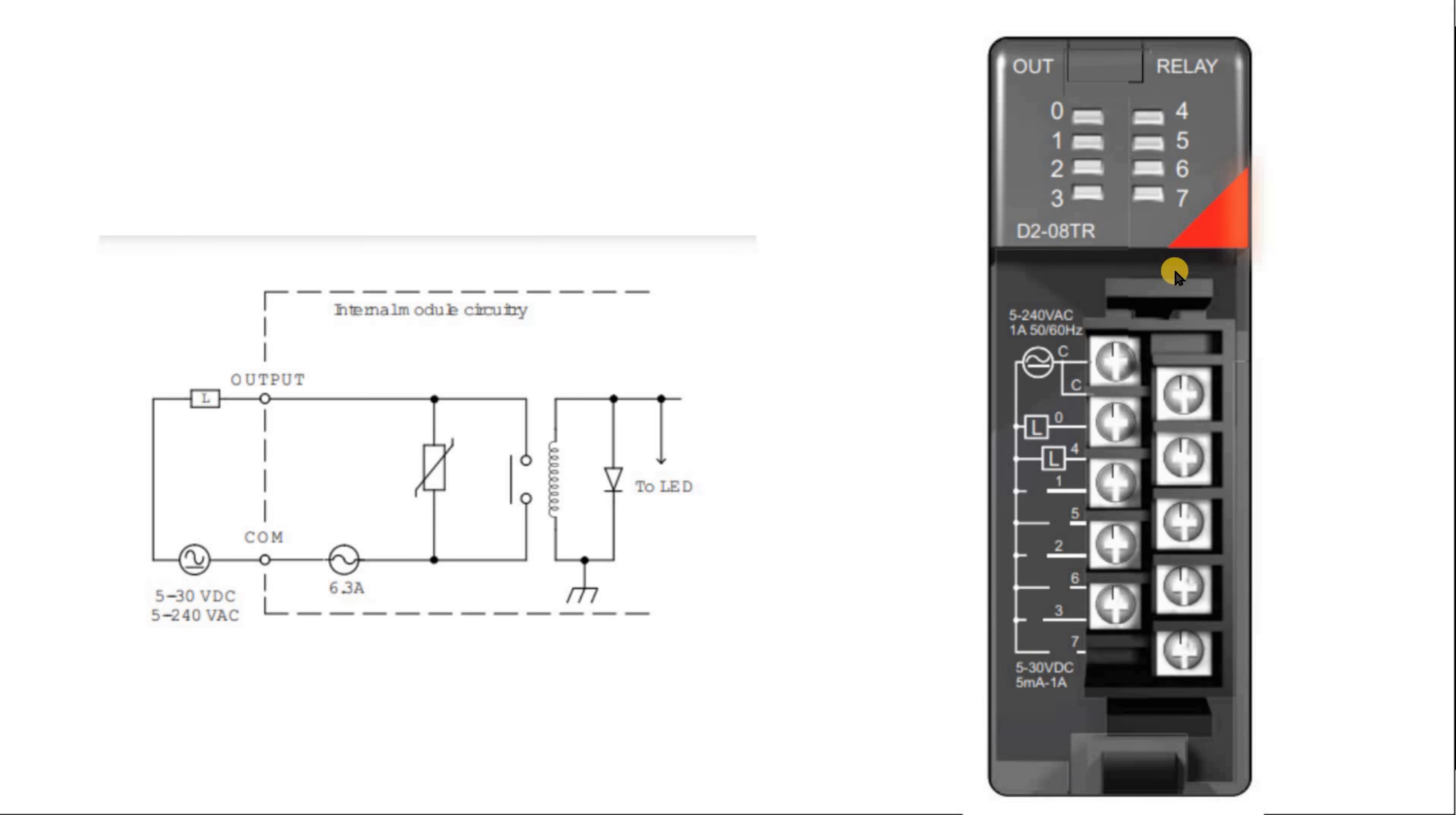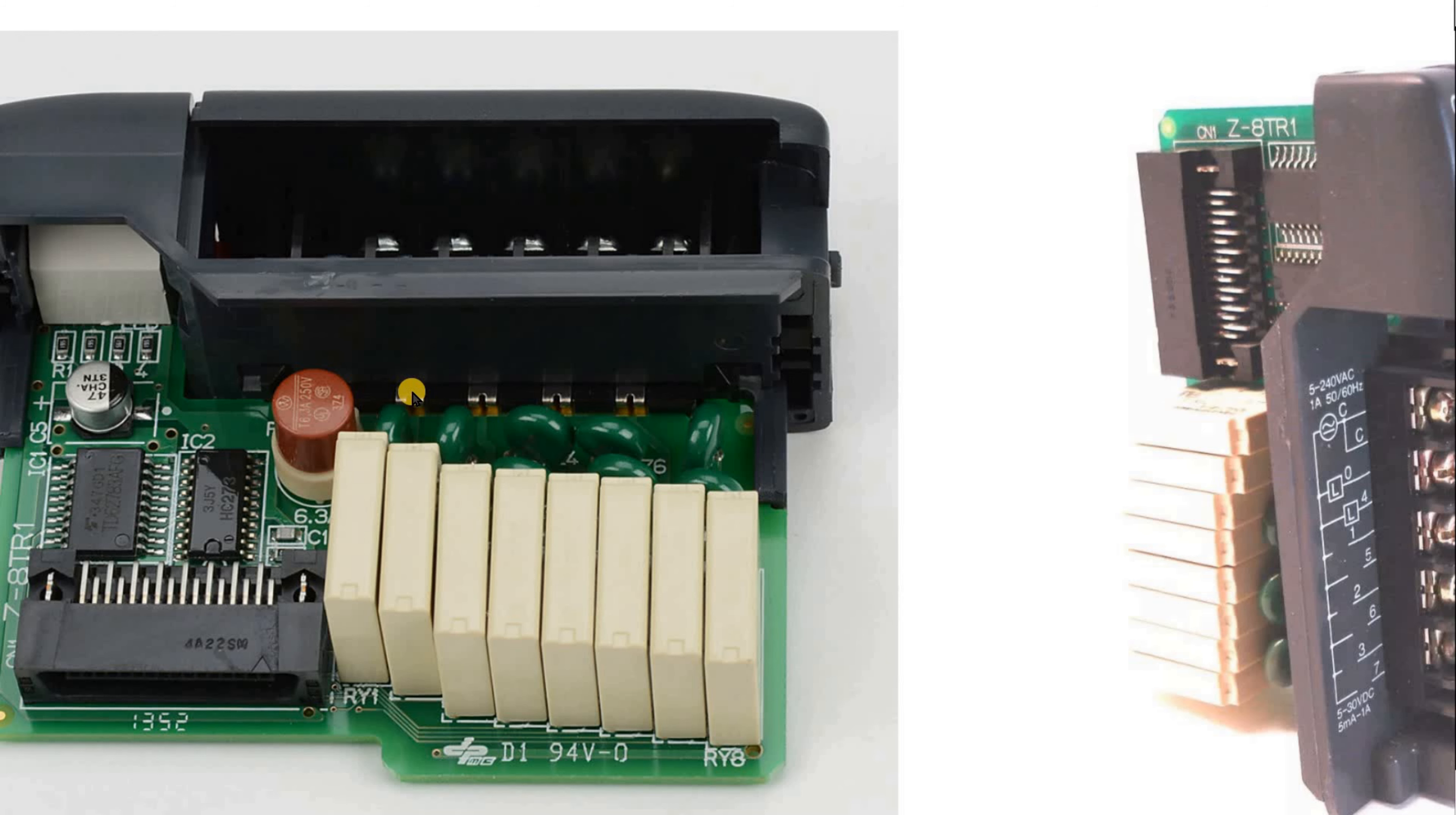The PLC is Automation Direct 2005 series. As you can see, the relay output has a fuse inside the card which should protect your circuit. Looking into the card itself, there is a fuse on a small base. The fuse wasn't there. There was no fuse, no base.